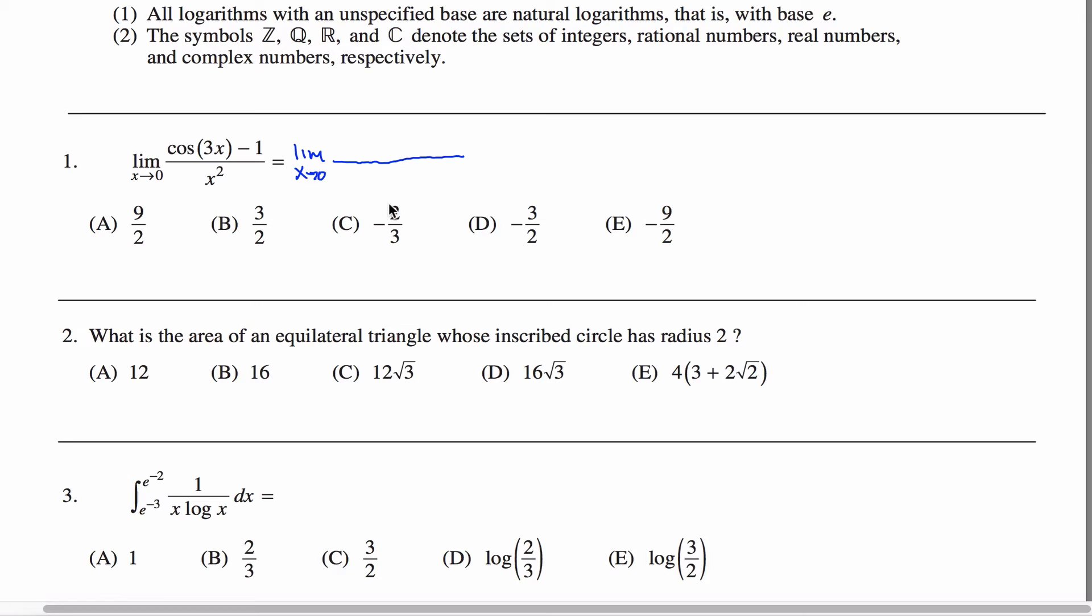So all I'm saying is take the derivative of the top and the derivative of the bottom. Derivative of x squared is 2x, the derivative of cosine of 3x minus one, well, the derivative of cosine of 3x, I'll use the chain rule to get negative sine of 3x times three. And then the derivative of minus one is zero, that just goes away, so I'm left with this limit to evaluate.